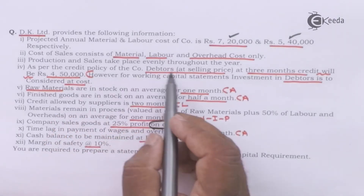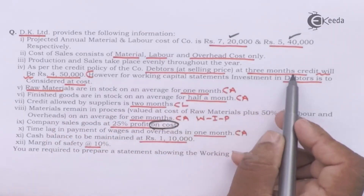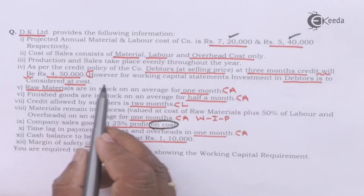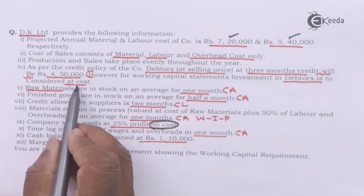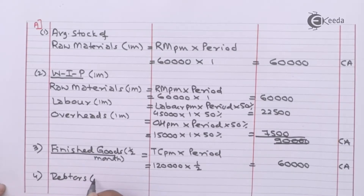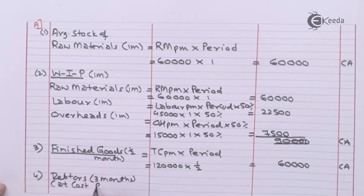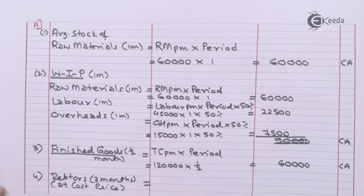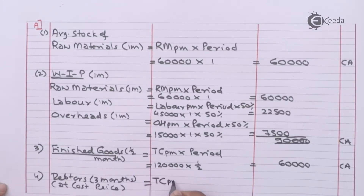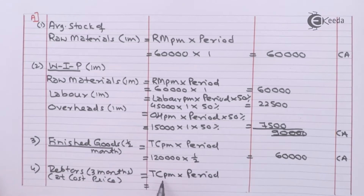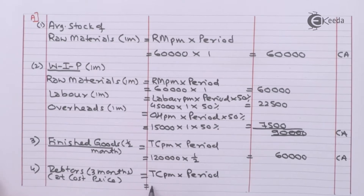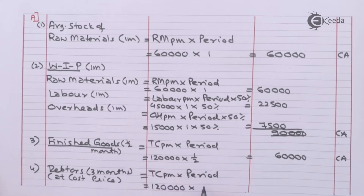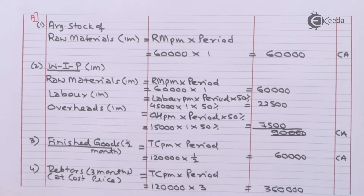As per the credit policy of the company, debtors at selling price at three months credit will be four lakh fifty thousand. However, for working capital statement, investment in debtors is to be considered at cost. So debtors: three months credit, calculation at cost price. Total cost per month multiplied by period — one lakh twenty thousand multiplied by three months — equals three lakh sixty thousand.